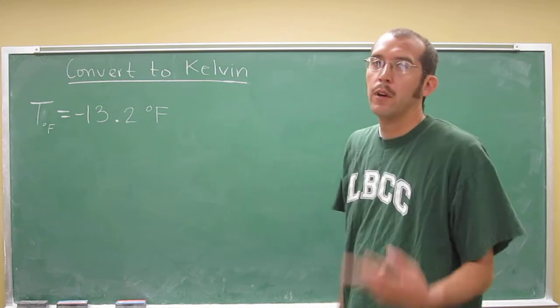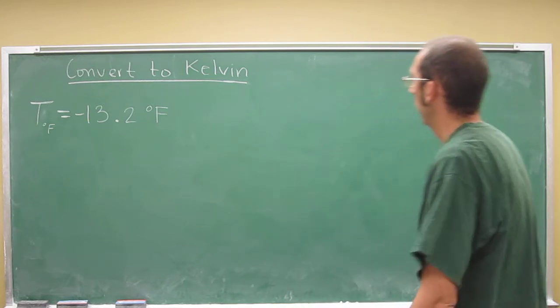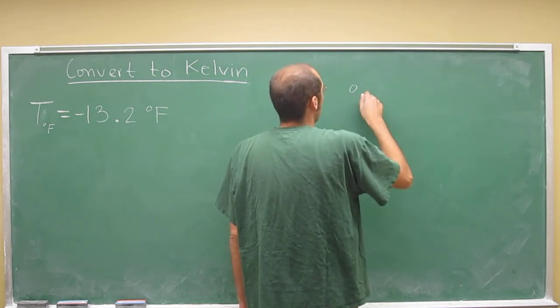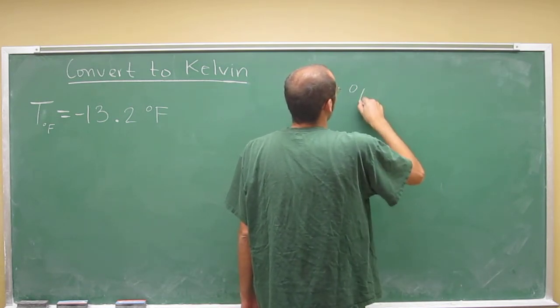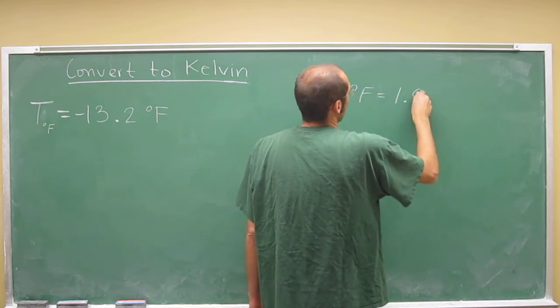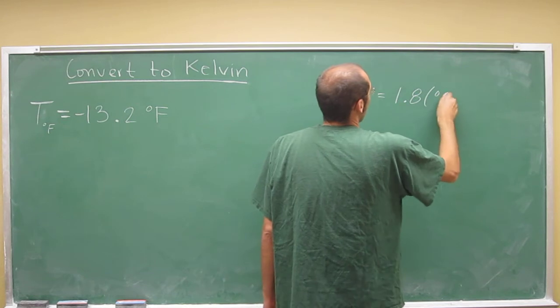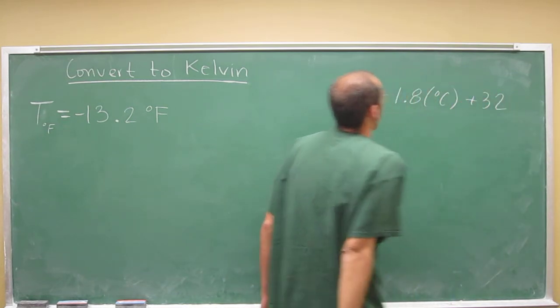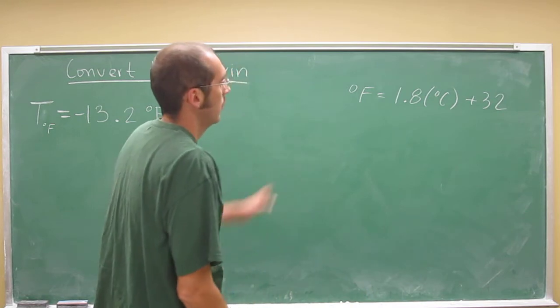you're going to have to remember two formulas. The formula from Celsius to Fahrenheit is °F = 1.8(°C) + 32. That's the one I remember.